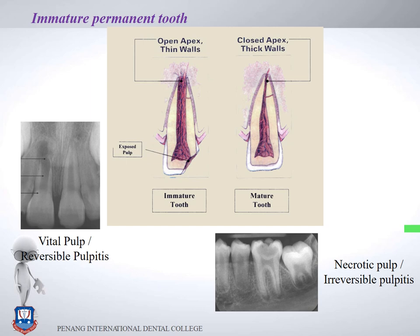In an open apex, the root walls are very thin. In a closed apex, the root walls are thicker. This creates a challenge where we must deal not only with the open apex but also with the fragility of the thin root walls.